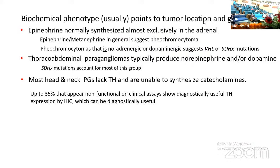However, a pheochromocytoma that is noradrenergic or dopaminergic suggests the presence of a VHL or SDHX mutation. Thoracoabdominal paragangliomas typically produce norepinephrine and/or dopamine and not epinephrine, and SDHX mutations account for most of this group. Most head and neck paragangliomas lack tyrosine hydroxylase and are therefore unable to synthesize any catecholamines. They may also lack other markers classically associated with paragangliomas, including tyrosine hydroxylase and chromogranin A. To diagnose some of these tumors correctly, we may have to resort to newer markers, including transcription factors INSM1 and GATA3.